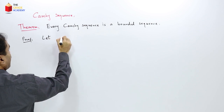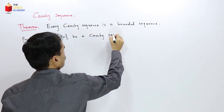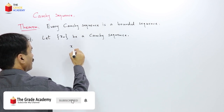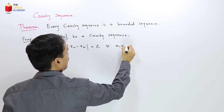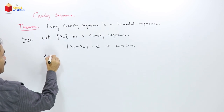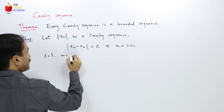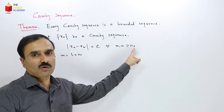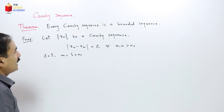Proof. Let xn be a Cauchy sequence. Then according to the definition of a Cauchy sequence, |xn − xm| < epsilon for all m and n greater than some positive integer n naught. Here let us take epsilon equal to 1 and let us take m equal to n naught + 1, since m must be a number greater than n naught. We will show that the sequence is bounded.